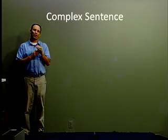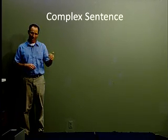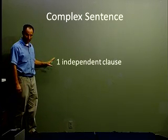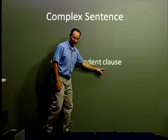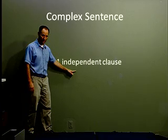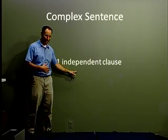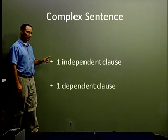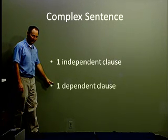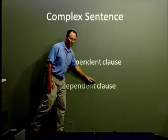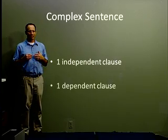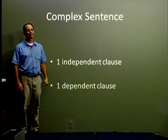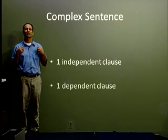We're going to move on and talk about the third type of sentence, which is the complex sentence. The complex sentence has one independent clause — remember, a clause is a subject-verb combination, independent means it can stand by itself or has a complete idea. But the complex sentence also has a dependent clause. A clause is a subject-verb combination, but what is dependent? Dependent means it cannot stand by itself, or it does not have a complete idea.